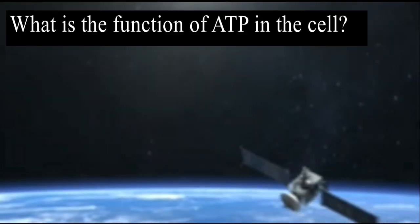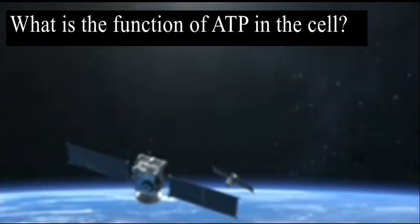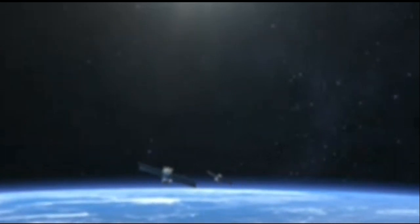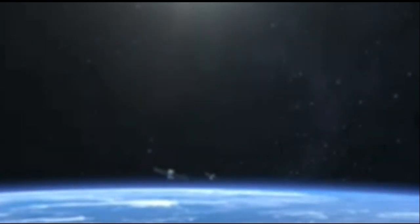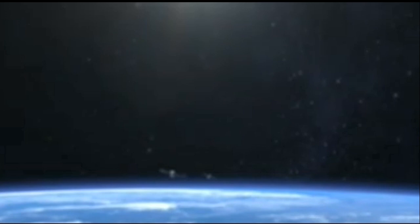What is the function of ATP in the cells? You have to answer in that way: ATP is the primary energy currency of the cells. It provides energy for cellular processes such as muscle contraction, protein synthesis, and all biochemical activity that takes place inside the cells or the organism.